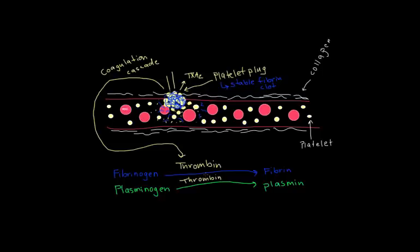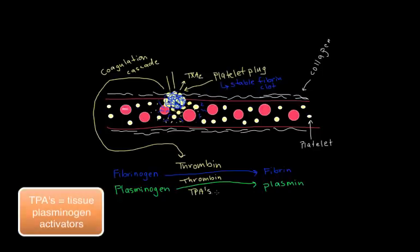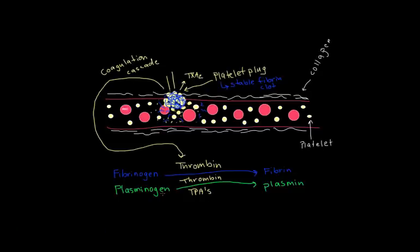Thrombin has two roles: it converts fibrinogen to fibrin and plasminogen to plasmin. There's also another class of proteins called TPAs, or tissue plasminogen activators, that also convert plasminogen to plasmin. What plasmin does is dissolve fibrin. This is important because you don't want clots to stay once the tissue is repaired—you want to dissolve the clot away. These clots dissolve slowly, so they're building up but being slowly dissolved at the same time. They grow faster than they're dissolved.